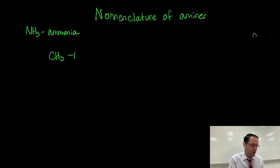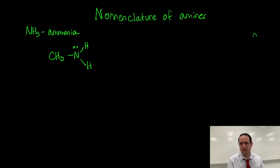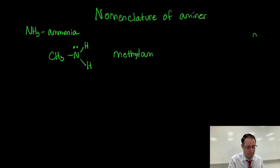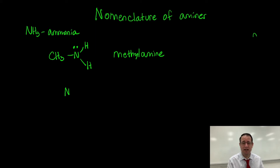If we have a simple alkyl group attached to the nitrogen, we can just call this methylamine. If you have two, it would be called dimethylamine. If you had three, it would be called trimethylamine.